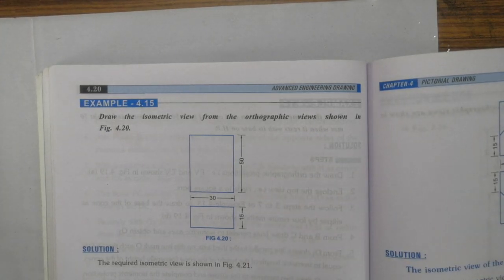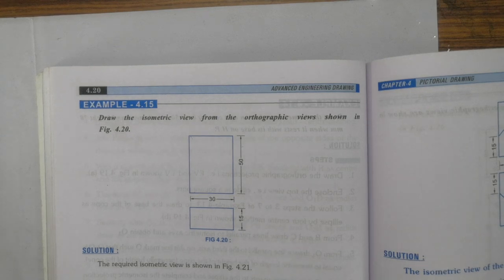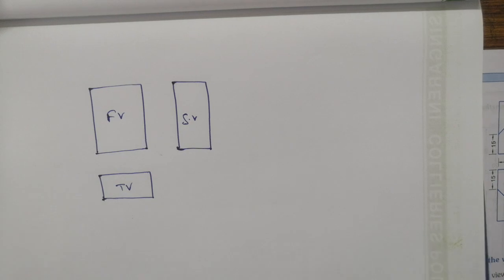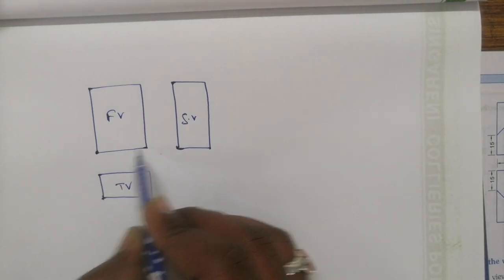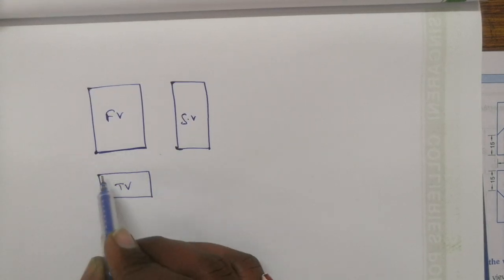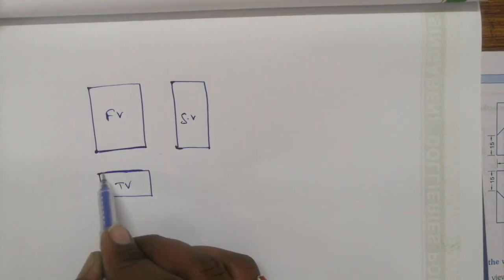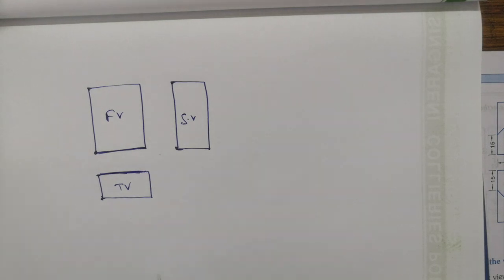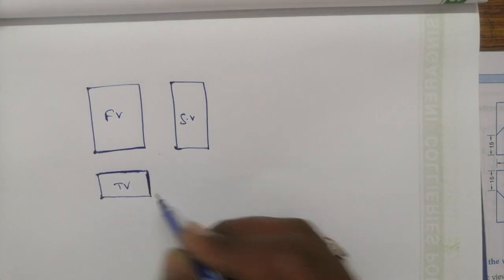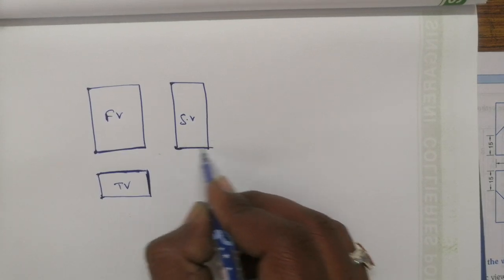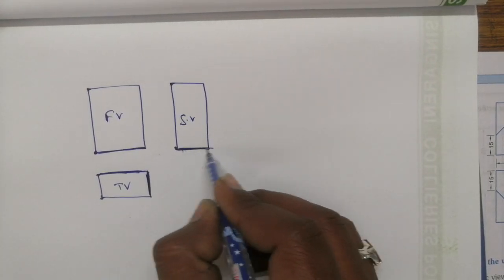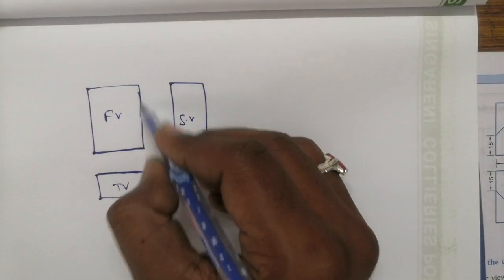So these are the things to remember. This length — the width of the front view — is equal to the width of the top view. The height or thickness of the top view is equal to the width of the side view, and the height of the front view is equal to the height of the side view.